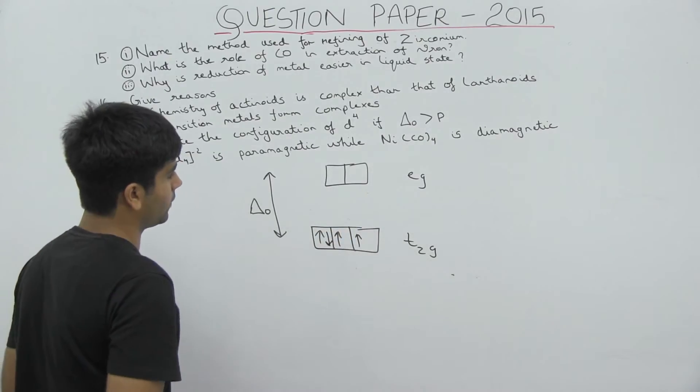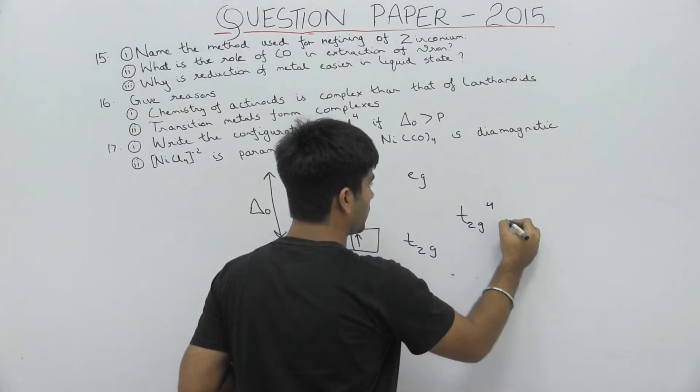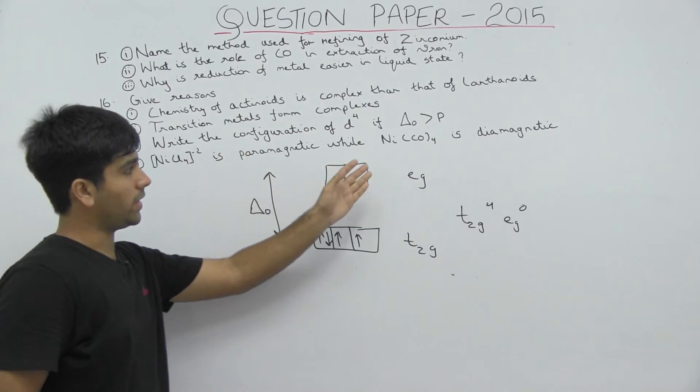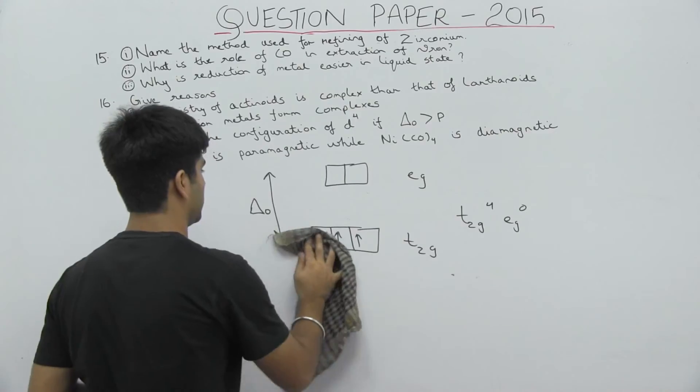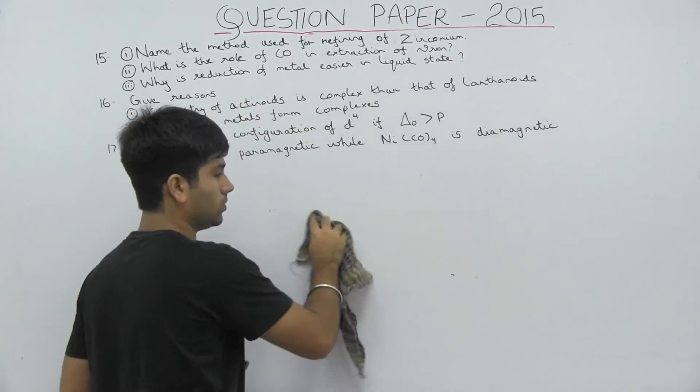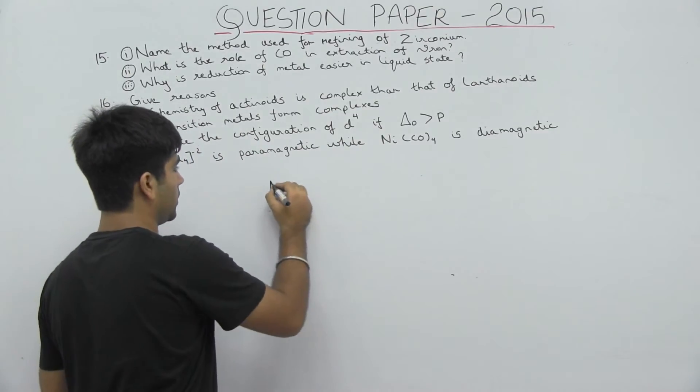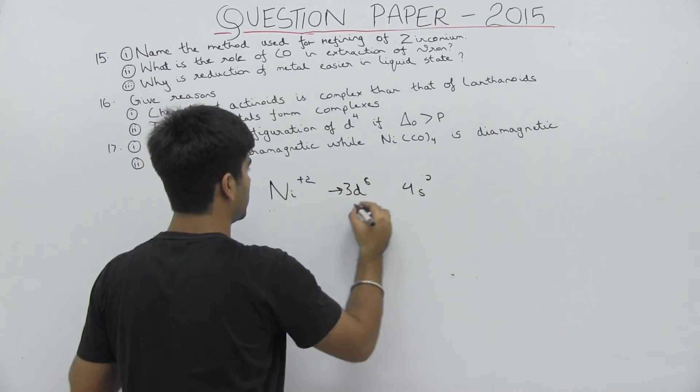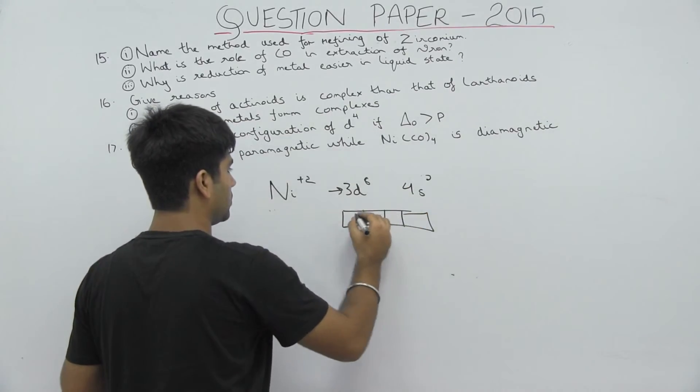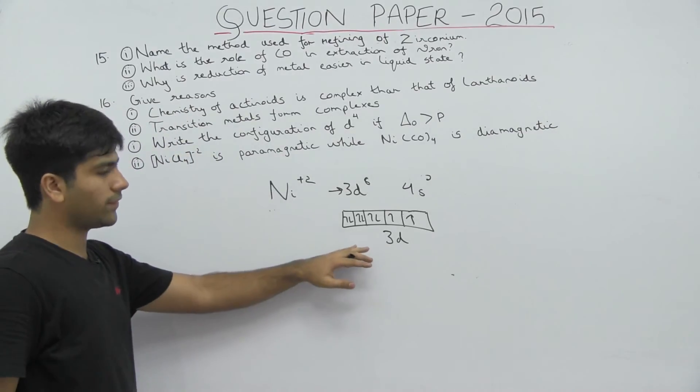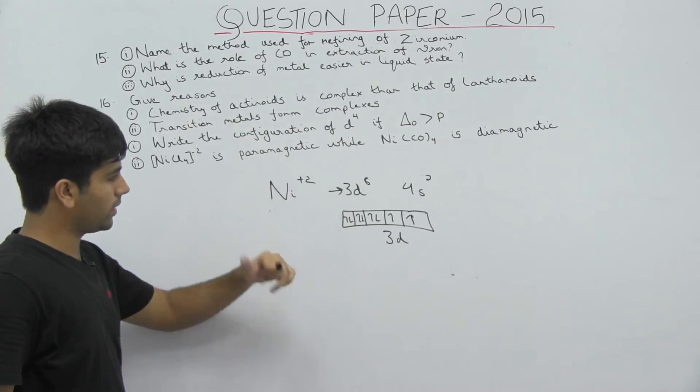NiCl4 is paramagnetic while Ni(CO)4 is diamagnetic. NiCl4, where nickel is +2, is d8. This configuration occurs because Cl is a weak field ligand and it will not be able to do the pairings. It has two unpaired electrons and it is paramagnetic.